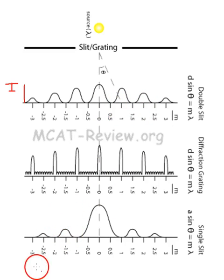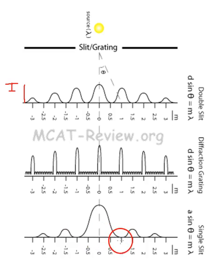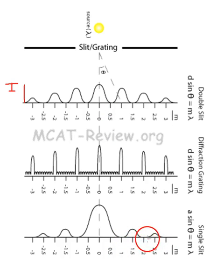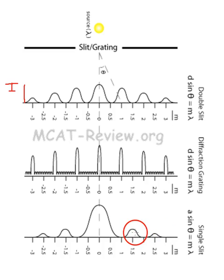Now let's look at the single slit. Notice the central bright spot is wider. It doesn't start to get dark until you reach that one wavelength path difference, whereas with the double slit you reach darkness at half a wavelength. Then you get the first bright spot at one and a half, and it alternates by a half. So whole wavelength path differences — 1, 2, 3 — is when you get your minimums, and your maximums are at the half wavelength path differences.